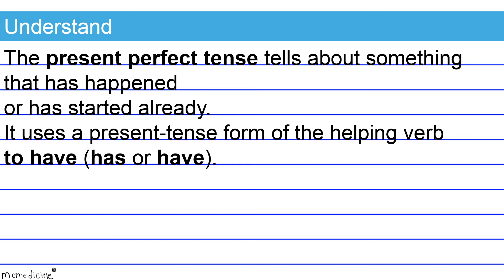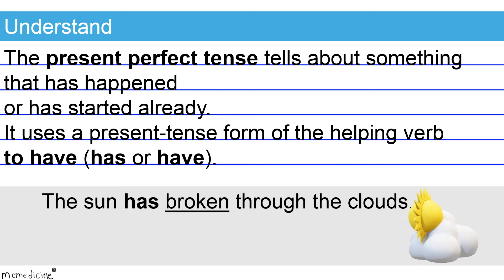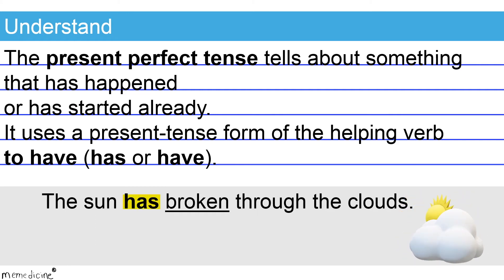That might have been a lot to digest mentally — check out these examples. 'The sun has broken through the clouds.' Note that 'has' is the third person singular form of the verb 'to have,' and it agrees with its singular subject, 'the sun.'